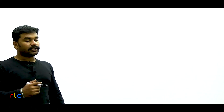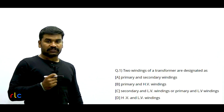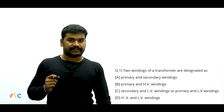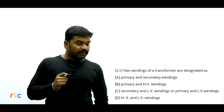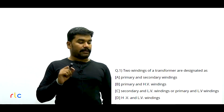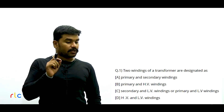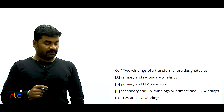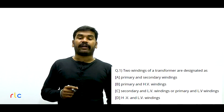The first question: two windings of a transformer are designated as — Option A says primary and secondary windings; Option B says primary and HV windings; Option C says secondary and LV windings or primary and LV windings; Option D says HV and LV windings.